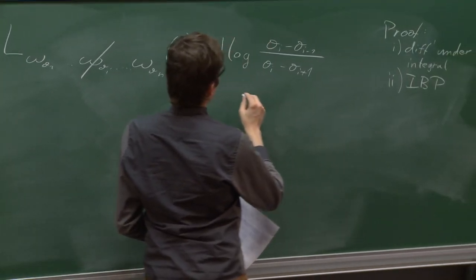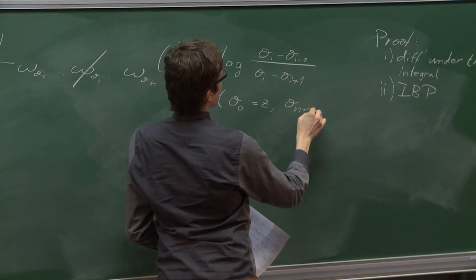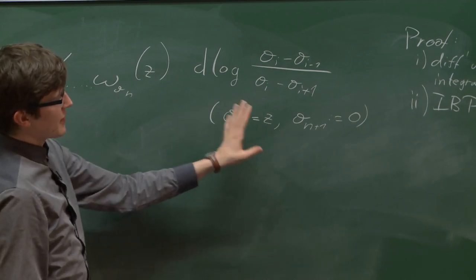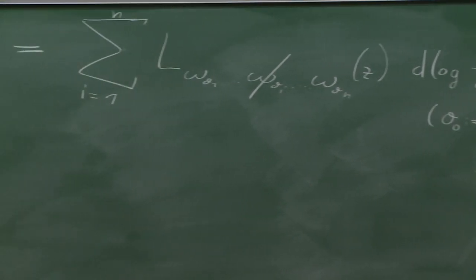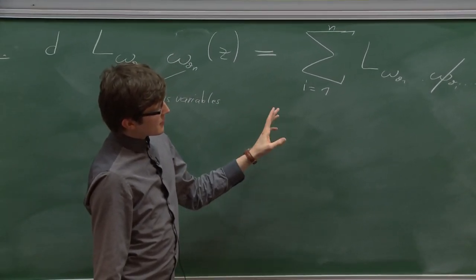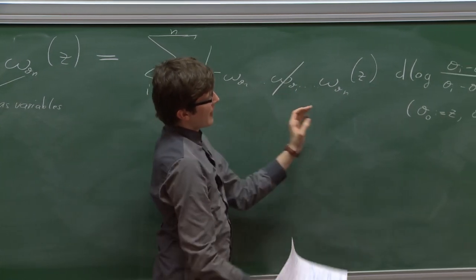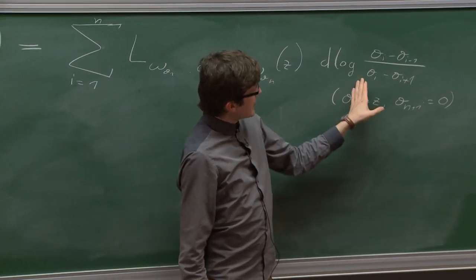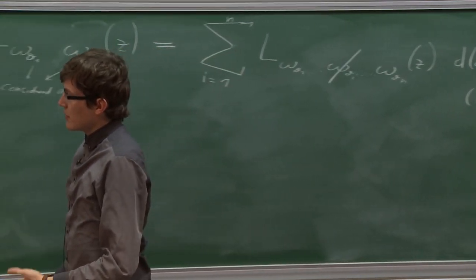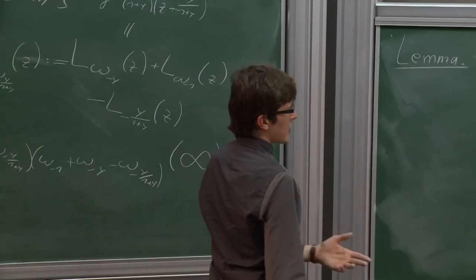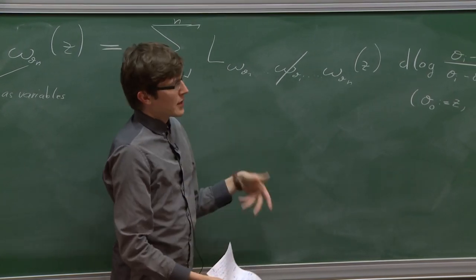There are boundary terms: sigma_0 is defined to be z and sigma_{n+1} is defined to be 0, corresponding to boundary terms of the integration. Applying this total derivative, you see the grading by weight and recursive structure of multiple polylogarithms: the right-hand side only has lower-weight multiple polylogarithms with one letter fewer, and explicit logarithmic derivatives. When these letters are rational functions of y, factoring them into zeros and poles gives hyperlogarithm differential forms.